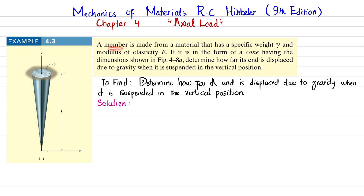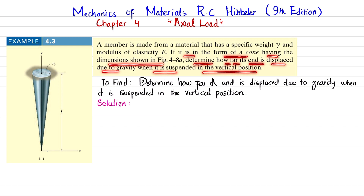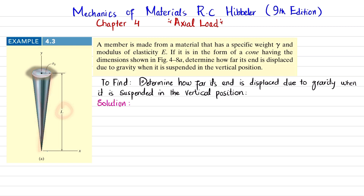The problem statement: a member is made from a material that has specific weight gamma and modulus of elasticity E. It is in the form of a cone having the dimensions shown — length L and radius R naught — and we must determine how far its end is displaced due to gravity when it is suspended in vertical position.